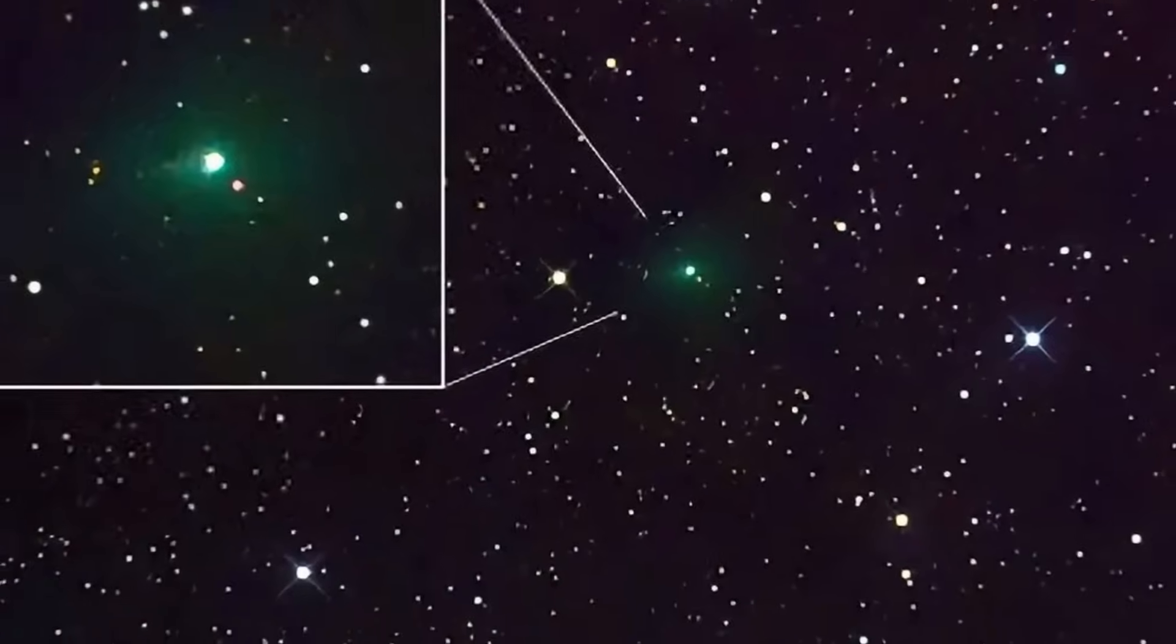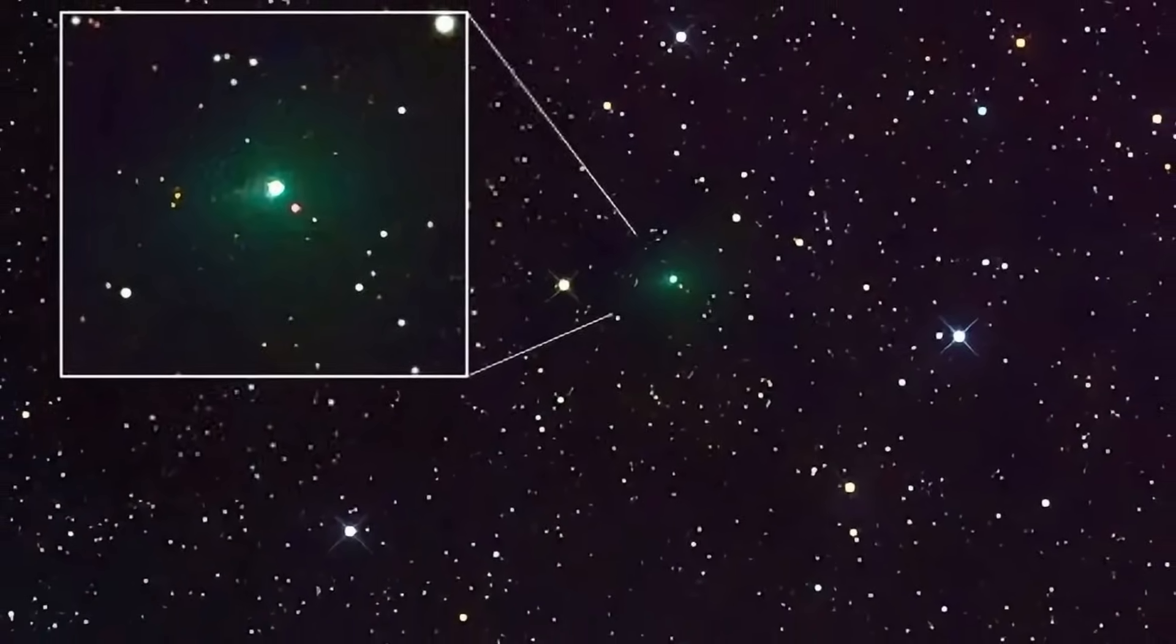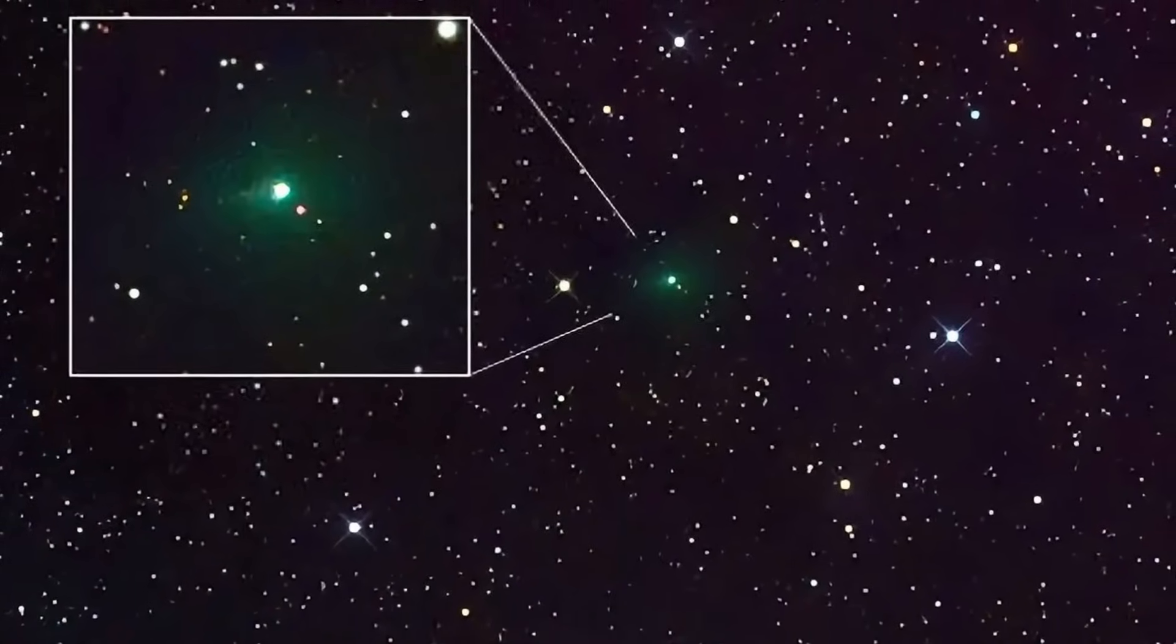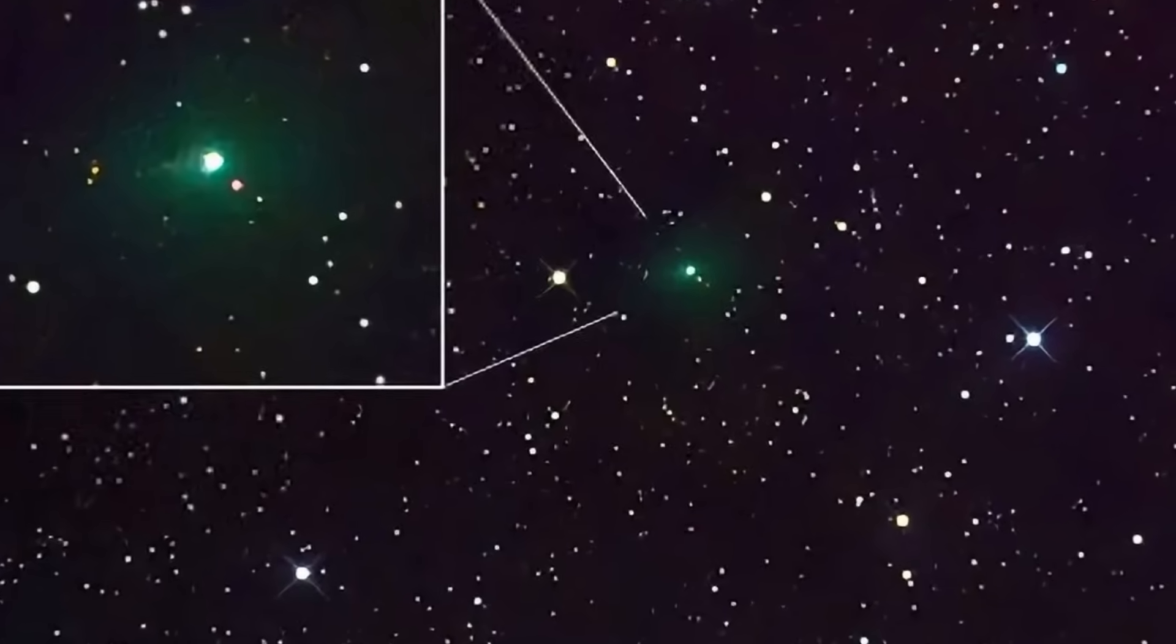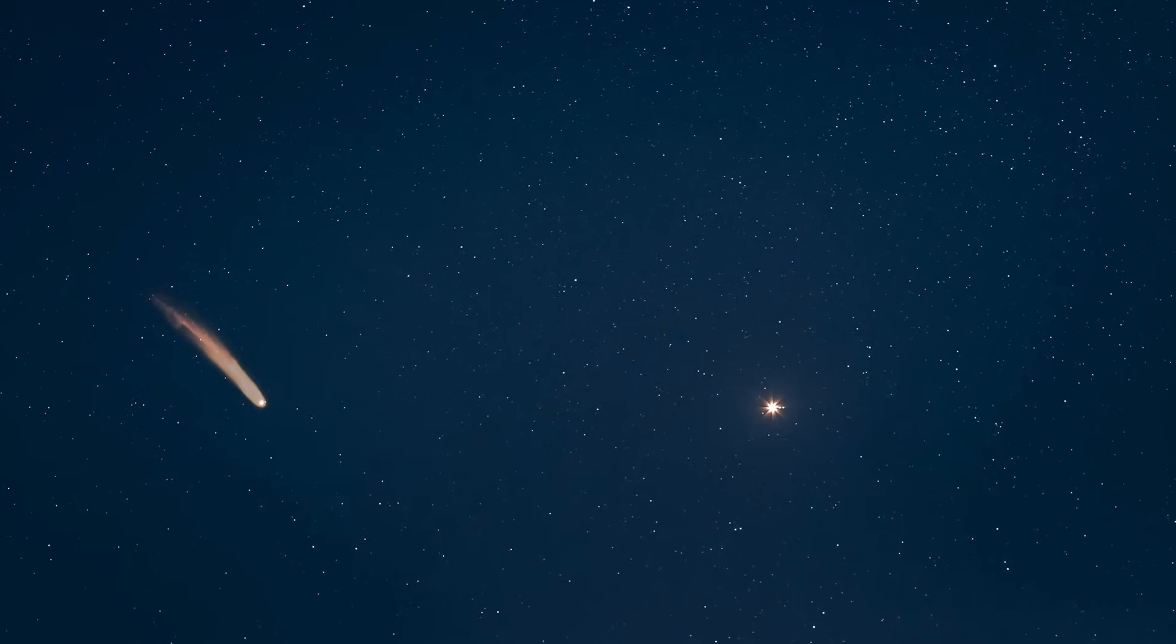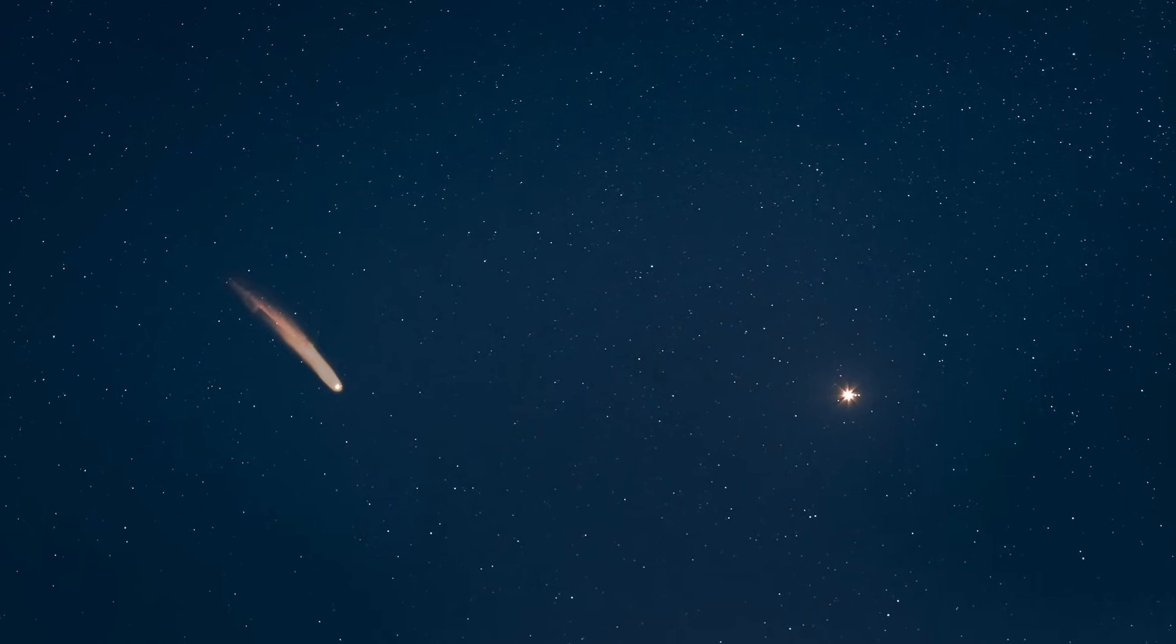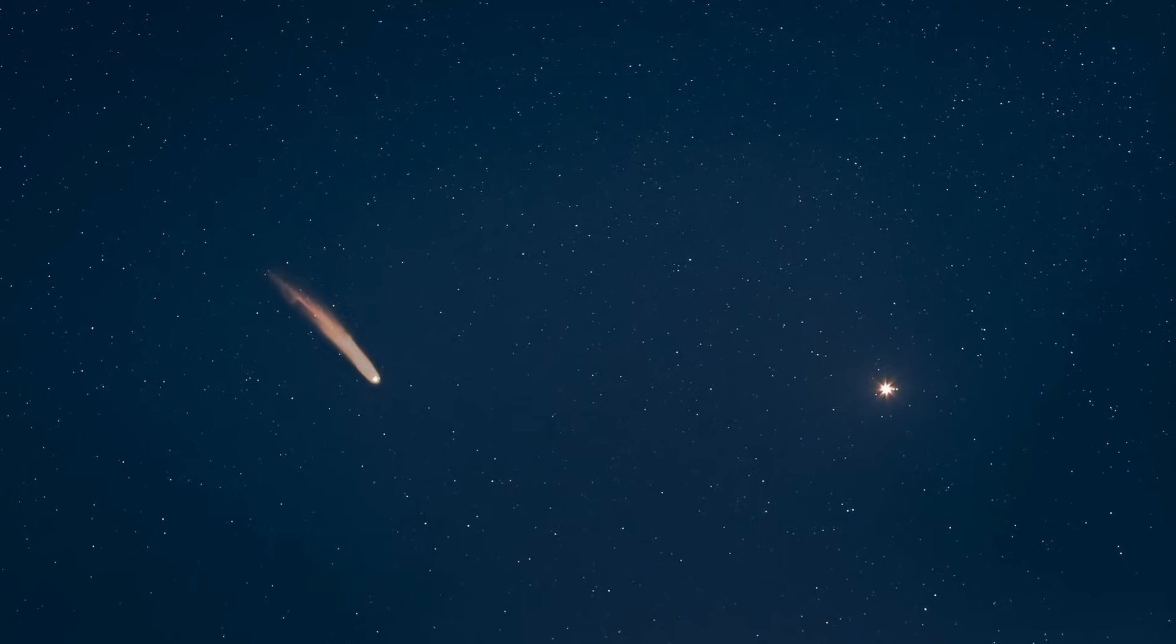And why now has it crossed paths with our solar system, threading a trajectory that takes it not only close to Earth, but past Mars and eventually Jupiter? Its orbital path lies close to the ecliptic plane, only 5 degrees off, as though carefully aligned with the major worlds of our system.